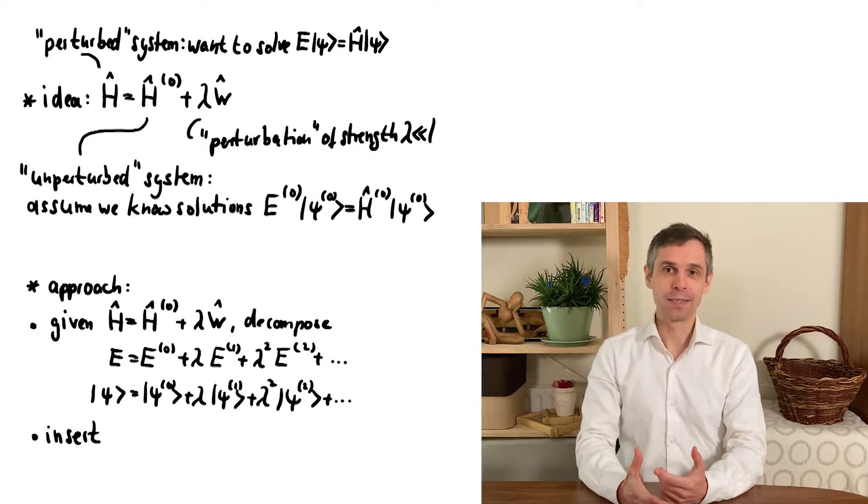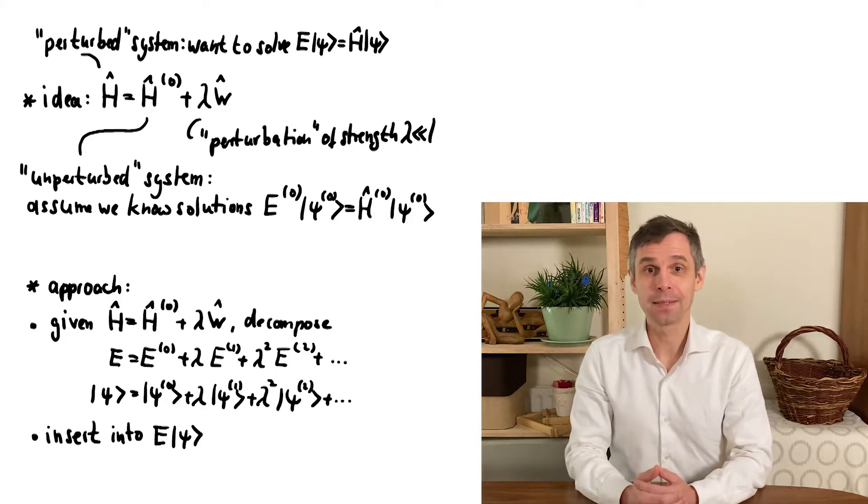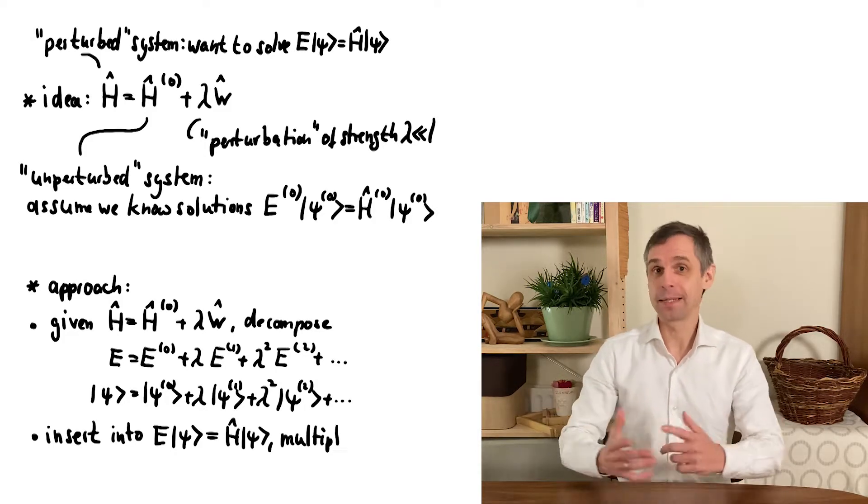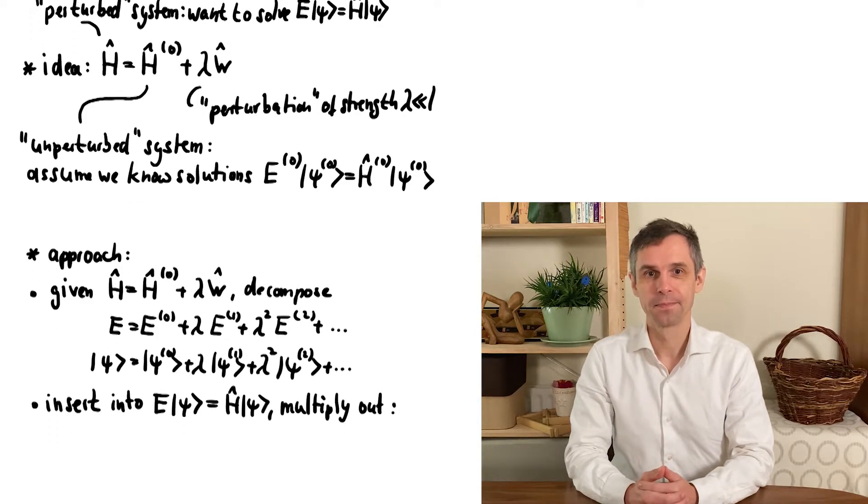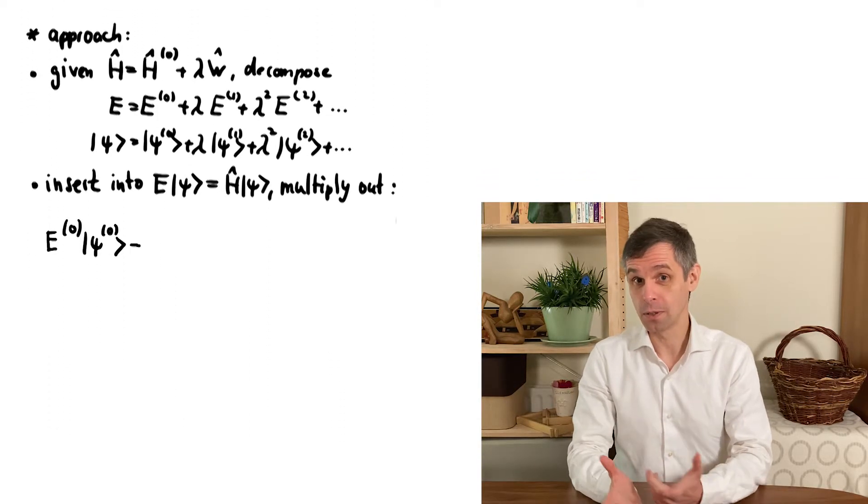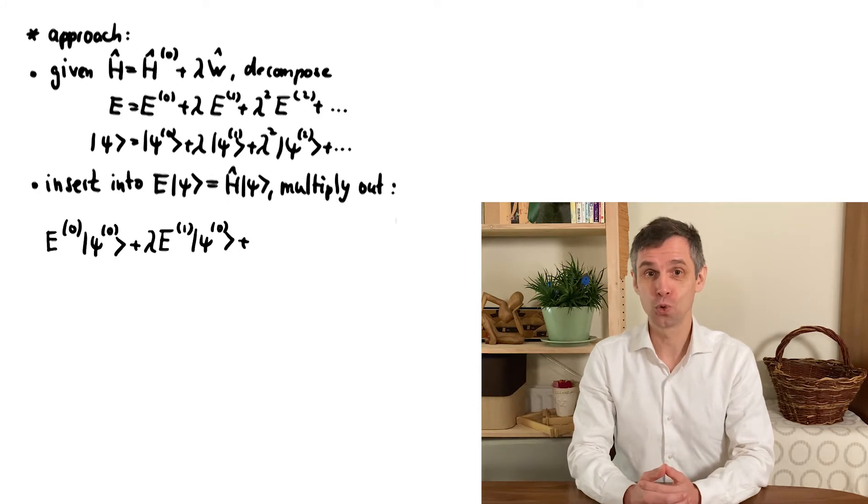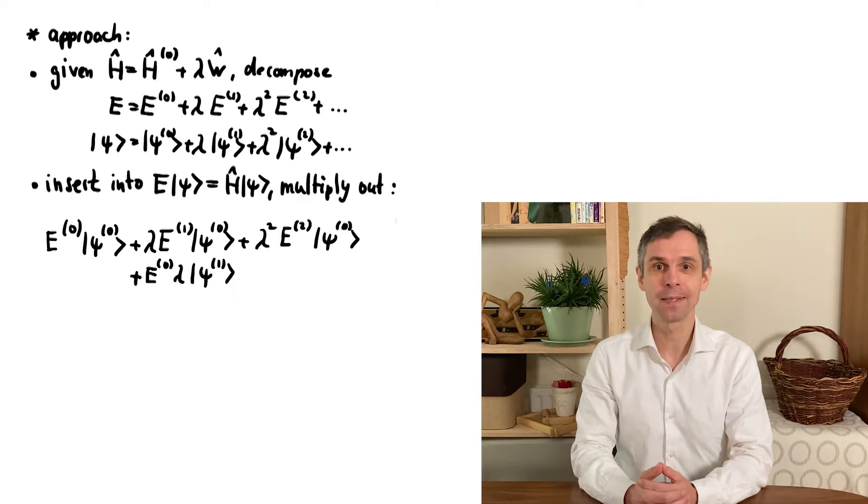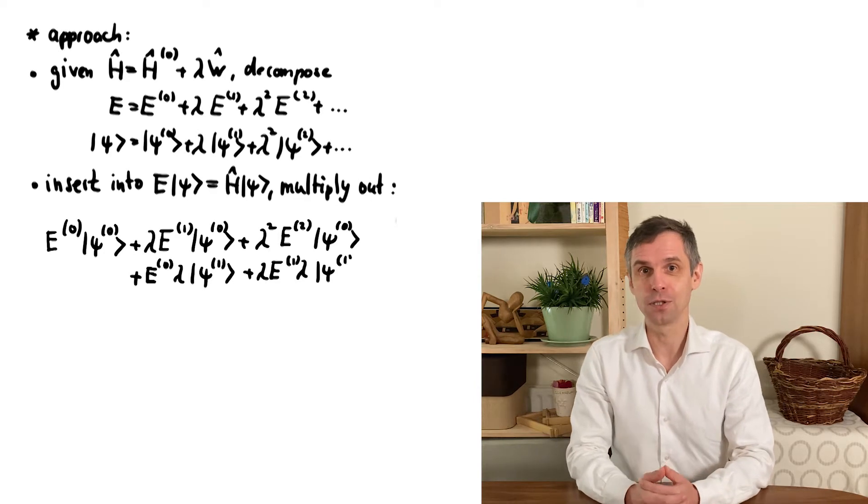Now to actually determine the terms in these expansions, we insert them into the Schrödinger equation and multiply everything out. This includes the Hamiltonian on the right-hand side. So for this too we also use a separated form with the part describing the simpler system and the part describing the perturbation.